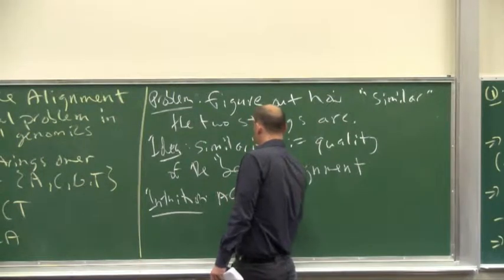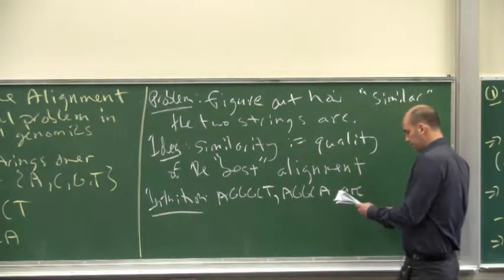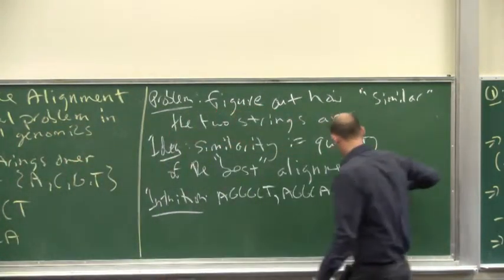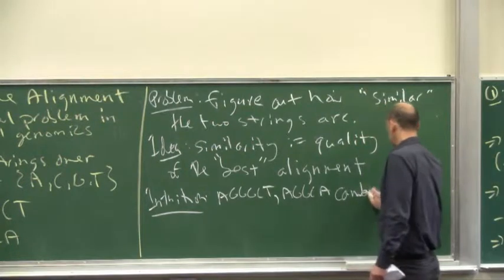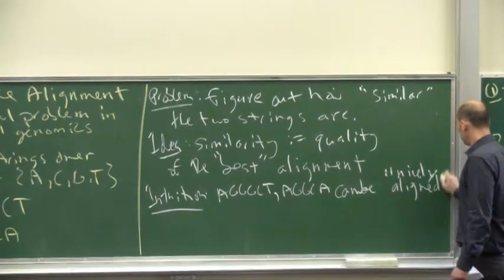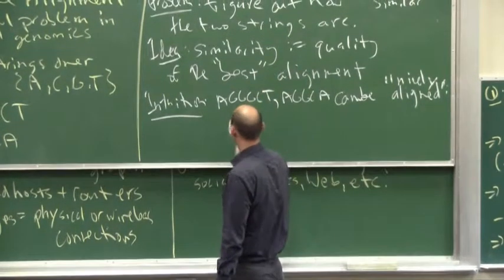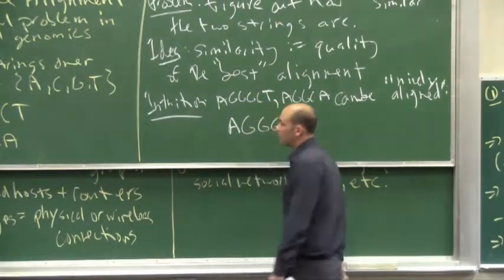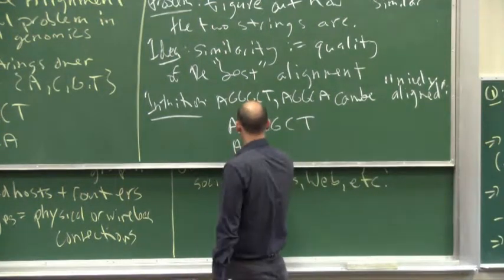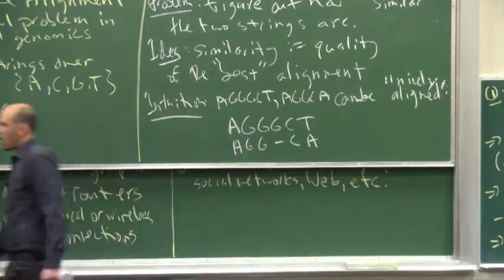So these two strings, we would say are pretty similar because they can be pretty nicely aligned. How would you do that? Well, you'd just write down the longer one. So as was pointed out, the second one actually is missing a letter. It has only five characters. So we'd have to insert a gap somewhere. And moreover, the other problem is that we get a mismatch in the last column.